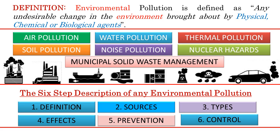For any kind of pollution, there are six broad subheadings under which you describe them. First, you need to define the pollution — air, water, soil, etc. Then you need to describe the sources of that particular pollution, followed by the major types. Then you can enumerate the effects of the pollution before finally moving on to its prevention and control. We shall look into each briefly for air pollution.